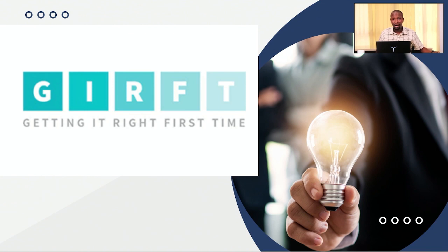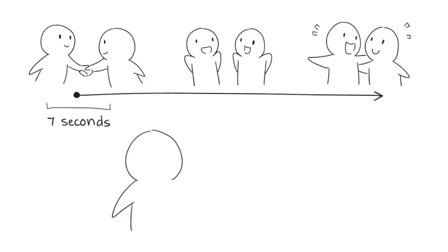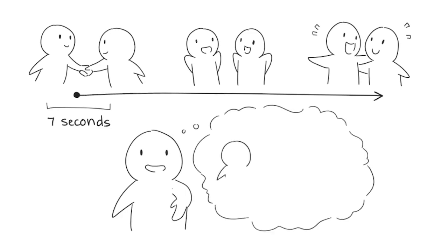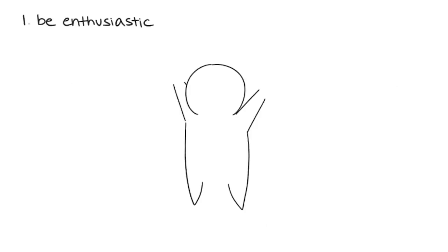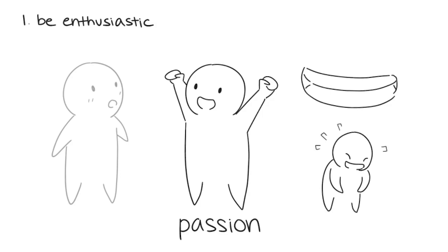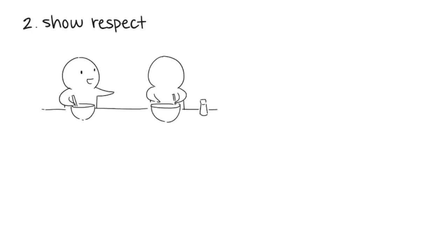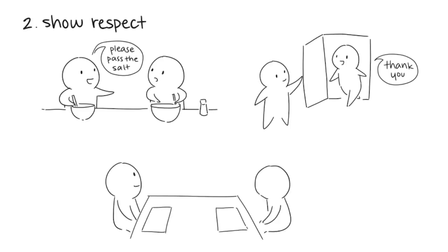It takes time to really get to know someone, but first impressions often determine whether someone is willing to spend more time learning about you. People's first impressions are made within seven seconds of meeting someone new. Here are some tips on making a good impression. One: be enthusiastic — show interest in the person you meet and don't be afraid to show excitement. People often see passion as a charming sign of strength. Two: show respect — people want to feel respected. Be polite with 'please' and 'thank you,' and treat everyone around you well, not just the person you're meeting.